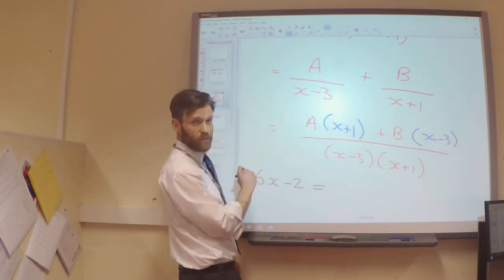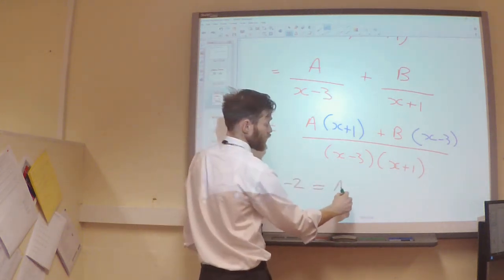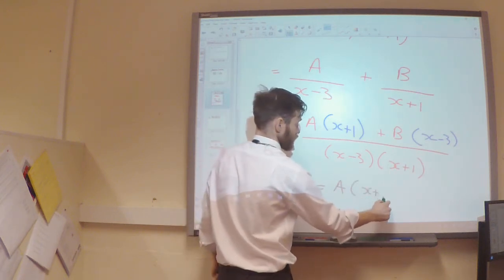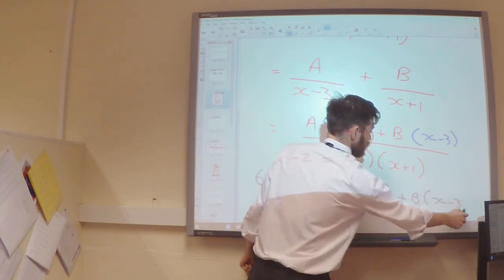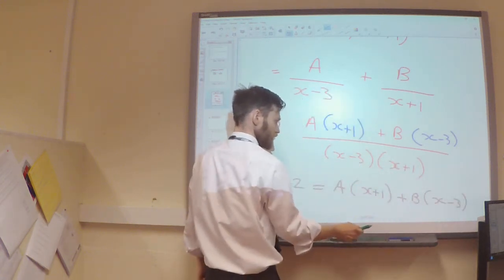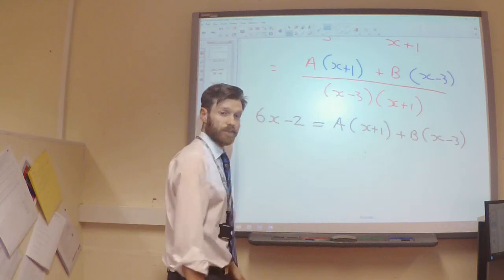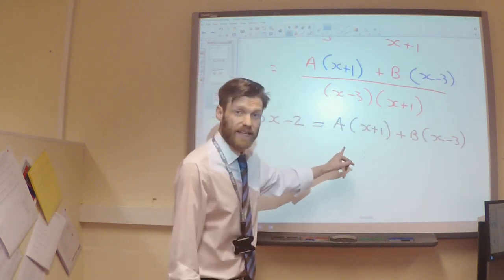The 6x minus 2 is on my numerator at the top, and that's going to equal my numerator. So, I want to know what A is, and I want to know what B is.